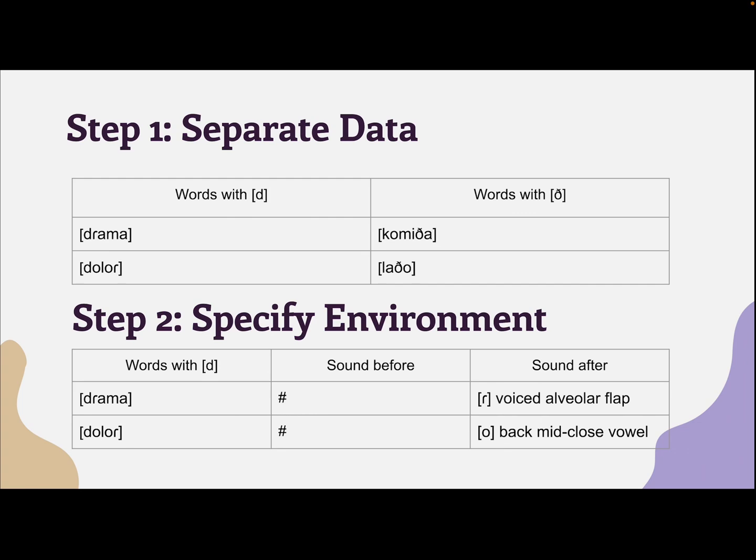Once that chart is complete, we have step two. Identify the phonetic environment. Is there a feature that would motivate some sort of alternation here? I start with a chart just for the plosive. I focus on what is happening before and after my target sound. After I complete this chart, I would make another for the fricative. Again, pause and take some time to make your chart. I'm sure as you start filling it out, you will see a pattern.